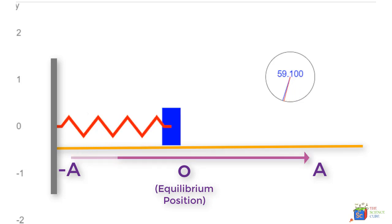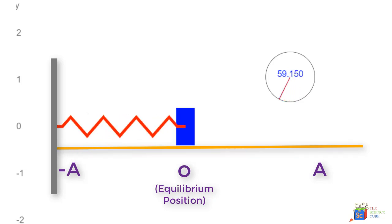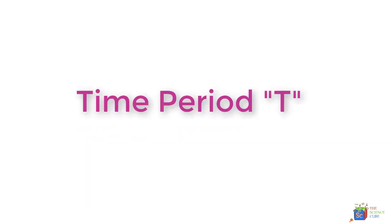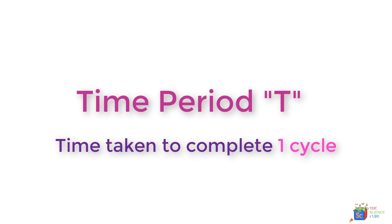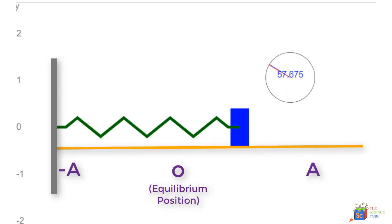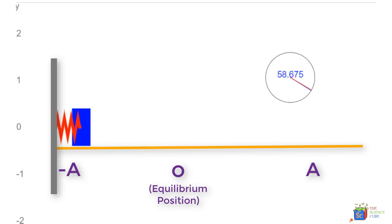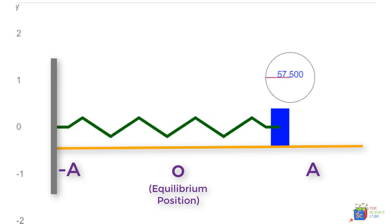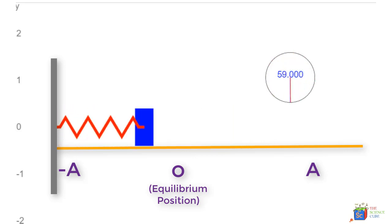The next term we need to understand is the time period T, which is nothing but the time taken to complete one cycle. When the mass moves from right to left and comes back to its original position, the time so taken is the time period of the oscillation, or you can say time taken to do one cycle.